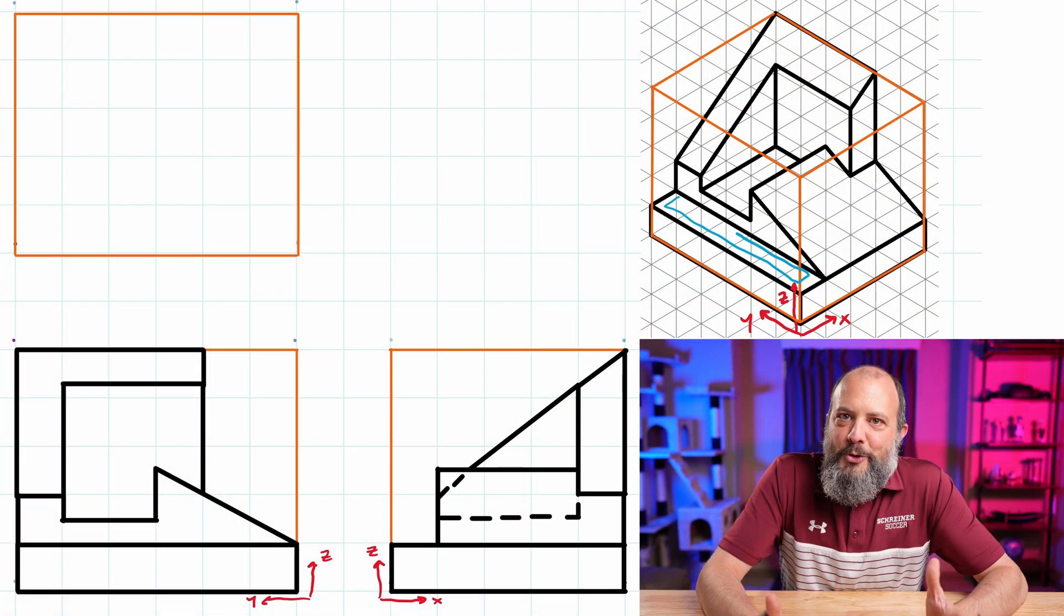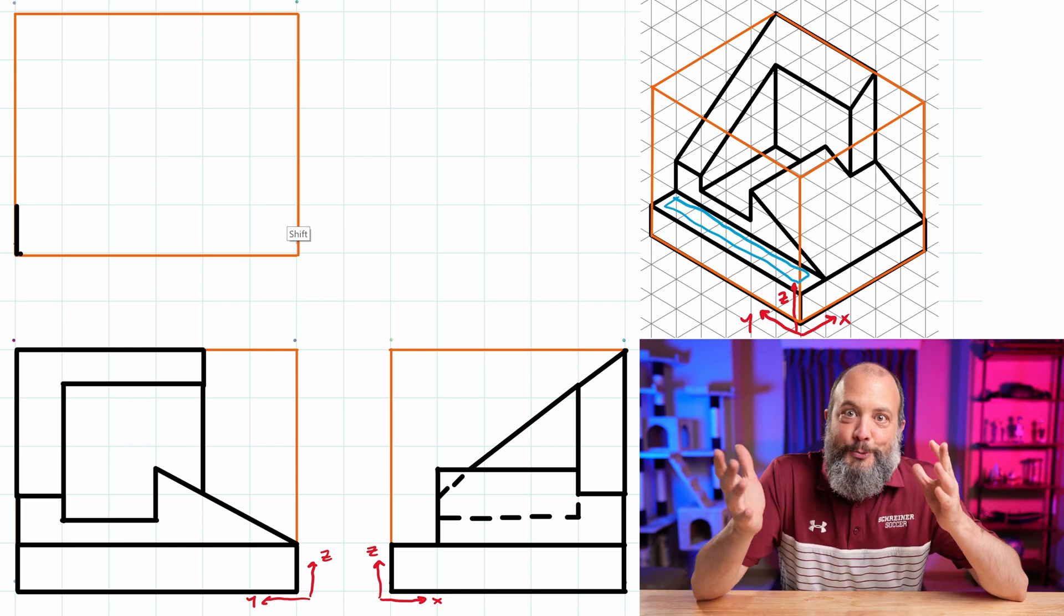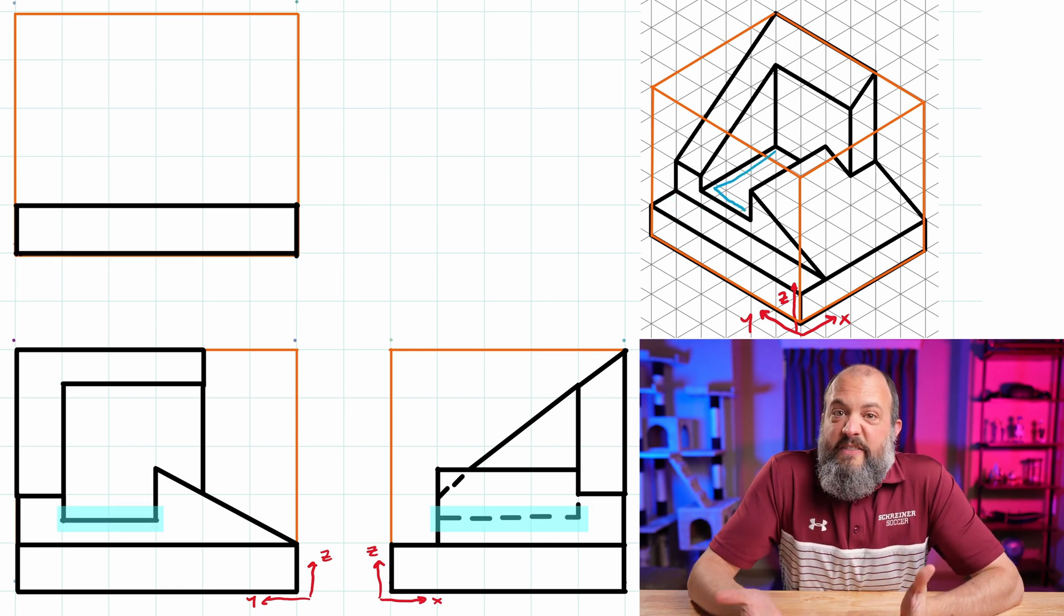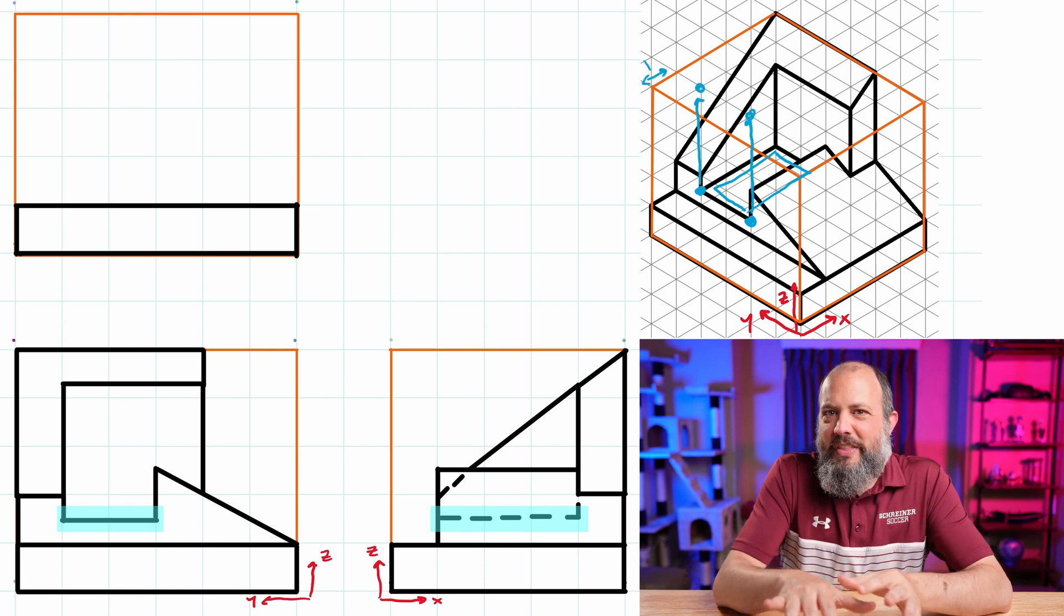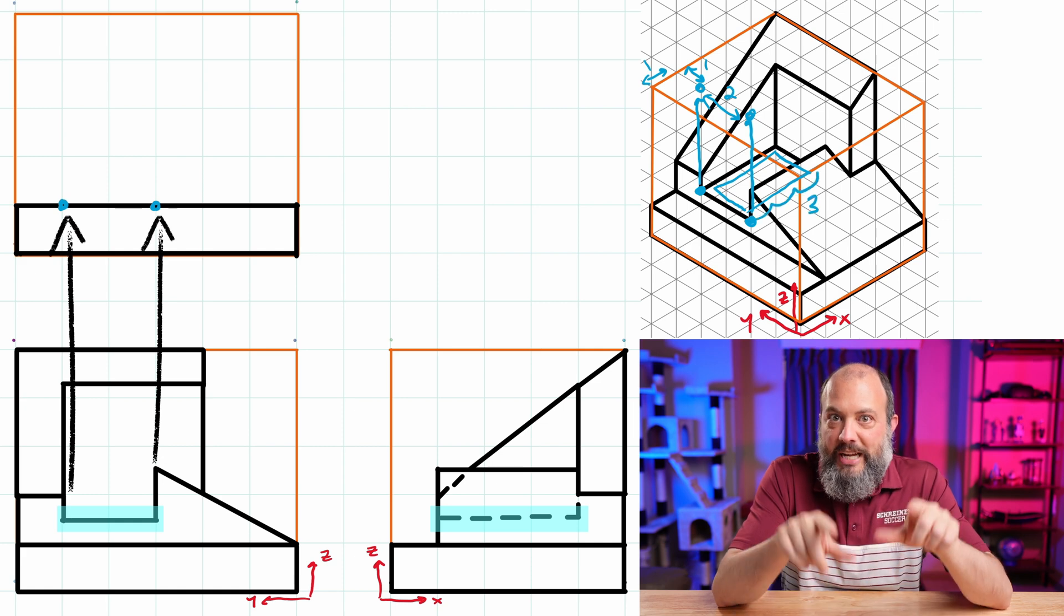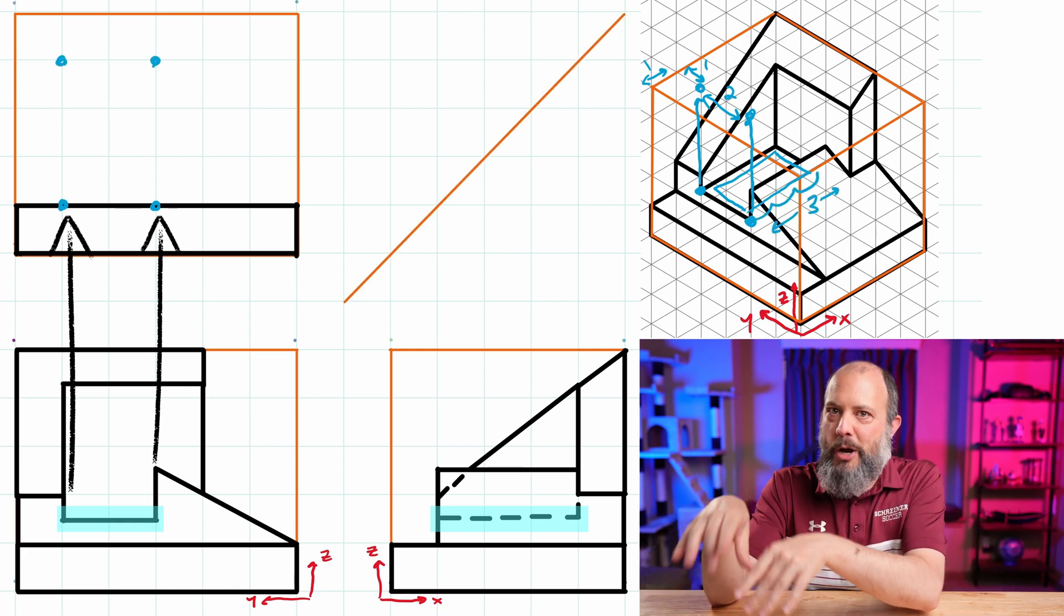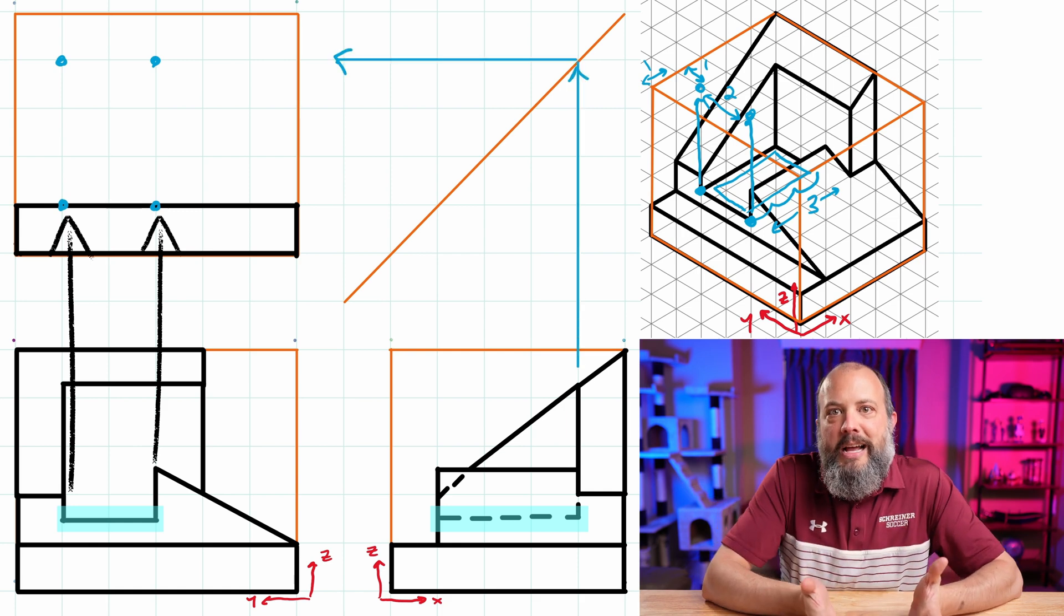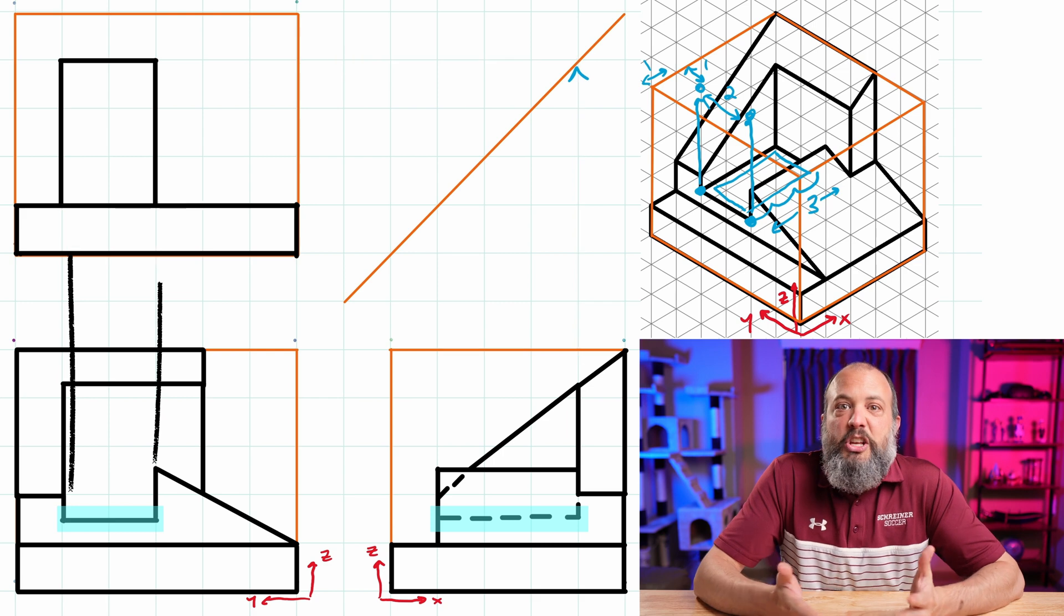Two-thirds of the way done. Almost there. Start off the top view by just drawing the plain rectangle that's down at the bottom, because at least there's one easy part to this drawing. There's one other flat face I can draw - it's this rectangle in the middle. And I can draw that using the miter line. So from the front view, I can just project straight upwards. And then from the right-side view, I project upwards and over across the miter line. And that helps me find the four points that mark that rectangular surface.